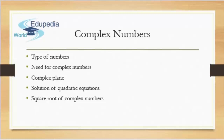First of all, we'll cover the rationale behind complex numbers, in which I'll be explaining to you why we have complex numbers, what is the need for complex numbers, how they came into being, why we use them, and whether anything can be solved without complex numbers. After we're done with that, we'll be concentrating on different properties of complex numbers and how they behave under different situations.